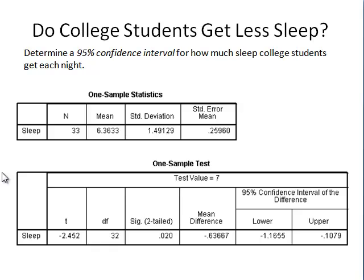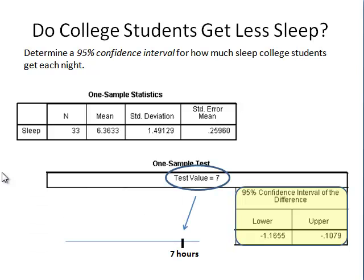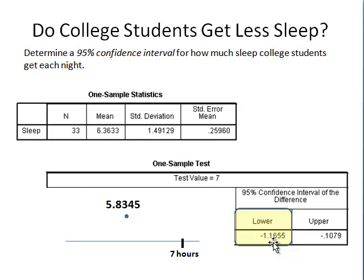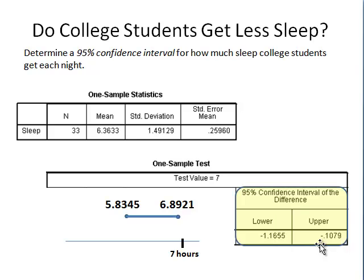Let's return to our SPSS output and focus on the 95% confidence interval of the difference. To create our confidence interval, we begin with our test value of 7 — our comparison point for the adult population. For college students, we take that 7 and add our lower bound value of negative 1.1655, which comes out to 5.83. For the upper bound, we take 7 and add the upper bound of negative 0.1079 that SPSS gave us, which comes out to 6.89. So our confidence interval ranges from 5.83 to 6.89.